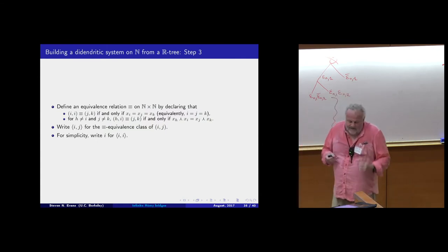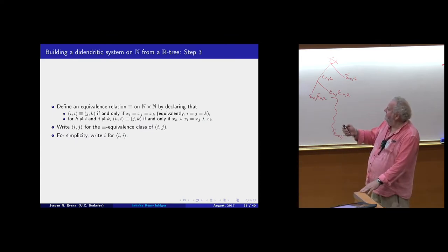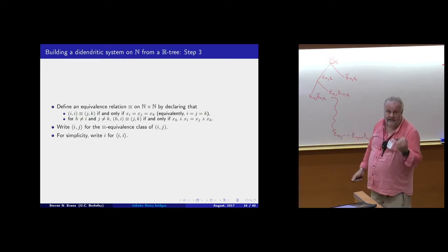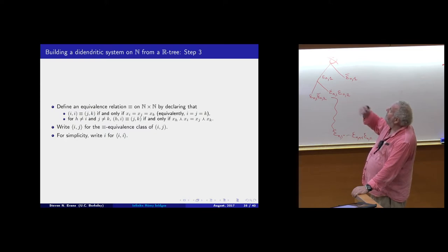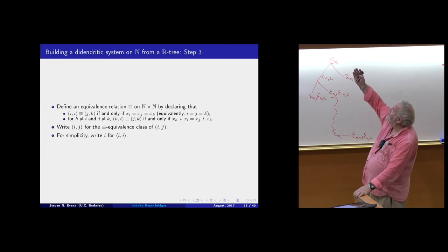Binarity means: for any distinct i, j, k, one of three relationships holds among their most recent common ancestors. The overall R-tree S need not be binary — it can have trifurcations — but if all the x's are suitably positioned, then from their point of view things are binary. We define an equivalence relation in the obvious way: the pair (i,i) only contains itself, so leaves are in their own equivalence classes; two pairs of leaves are equivalent if and only if their corresponding most recent common ancestors in the tree are equal.